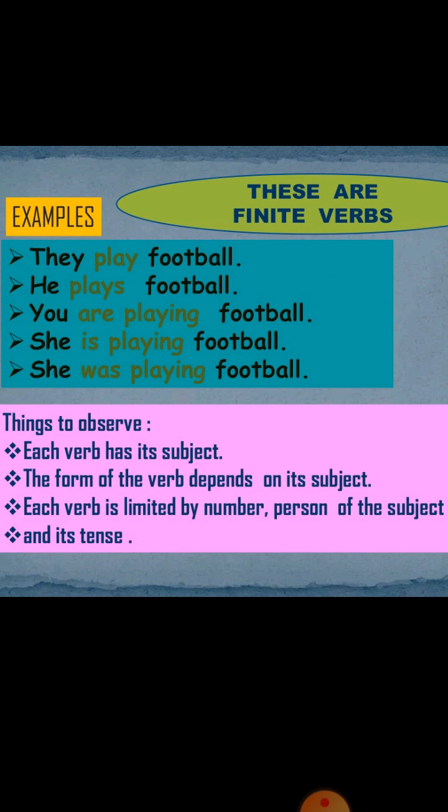In these examples, 'play' is a finite verb because it agrees with 'they.' In the second example, 'he plays' — 'plays' agrees with 'he,' the subject, so it is a finite verb. 'You are' — 'are' is finite. 'She is' — 'is' is finite. 'She was' — 'was' is finite. Each verb agrees with the subject as well as telling the tense.